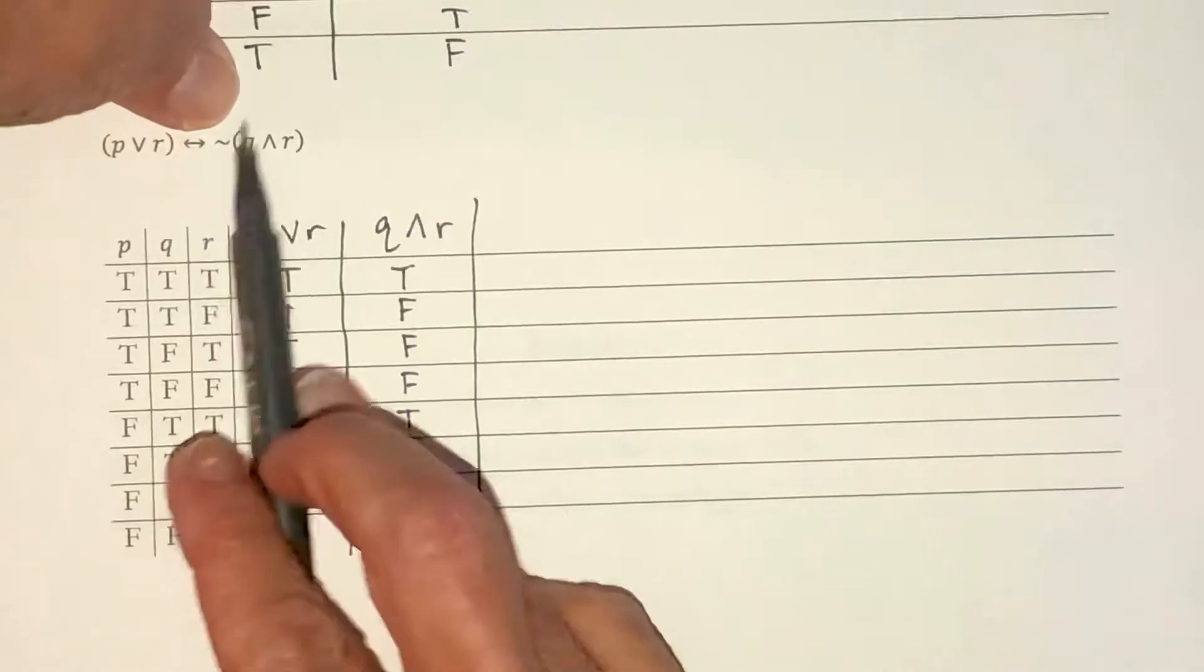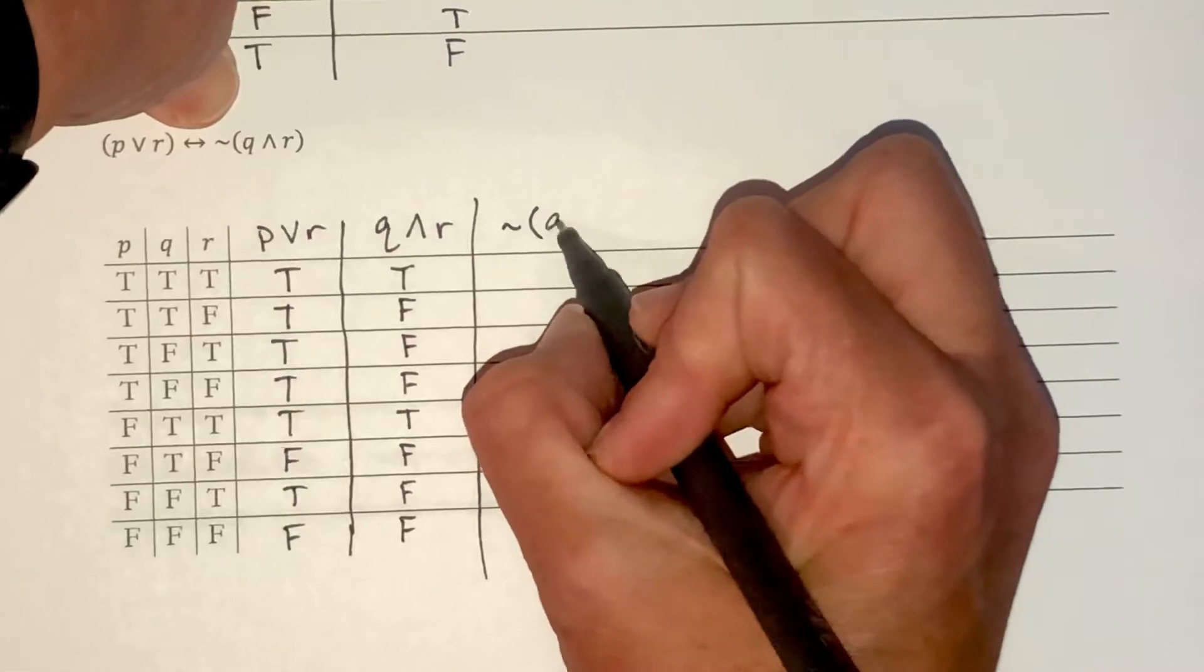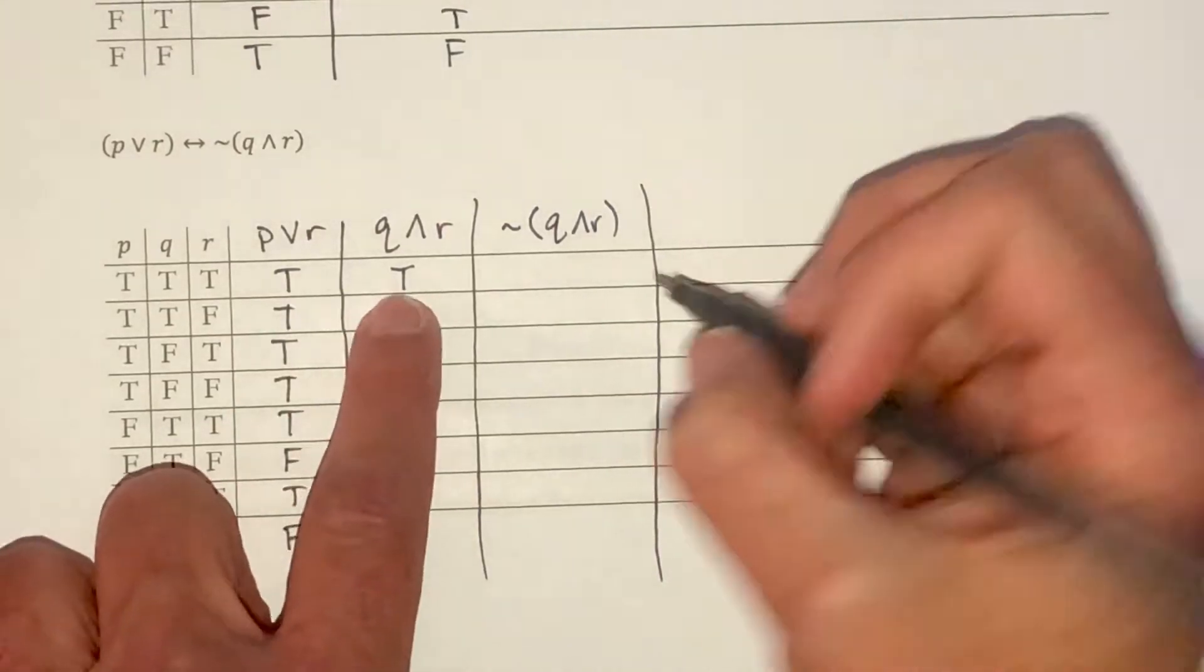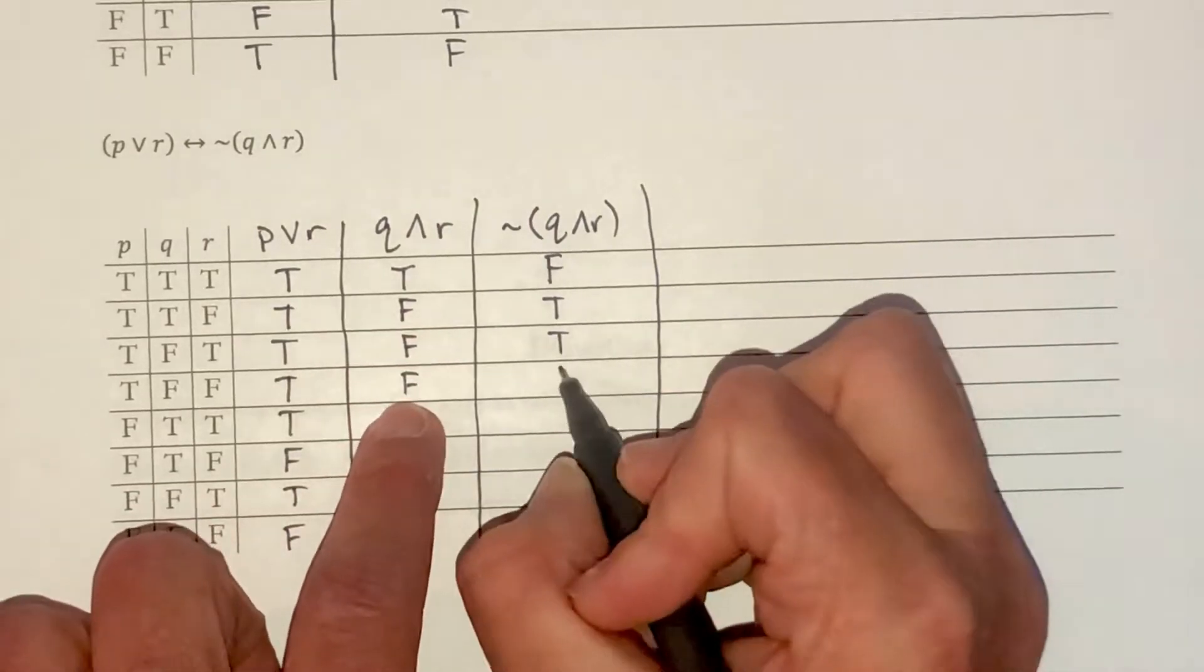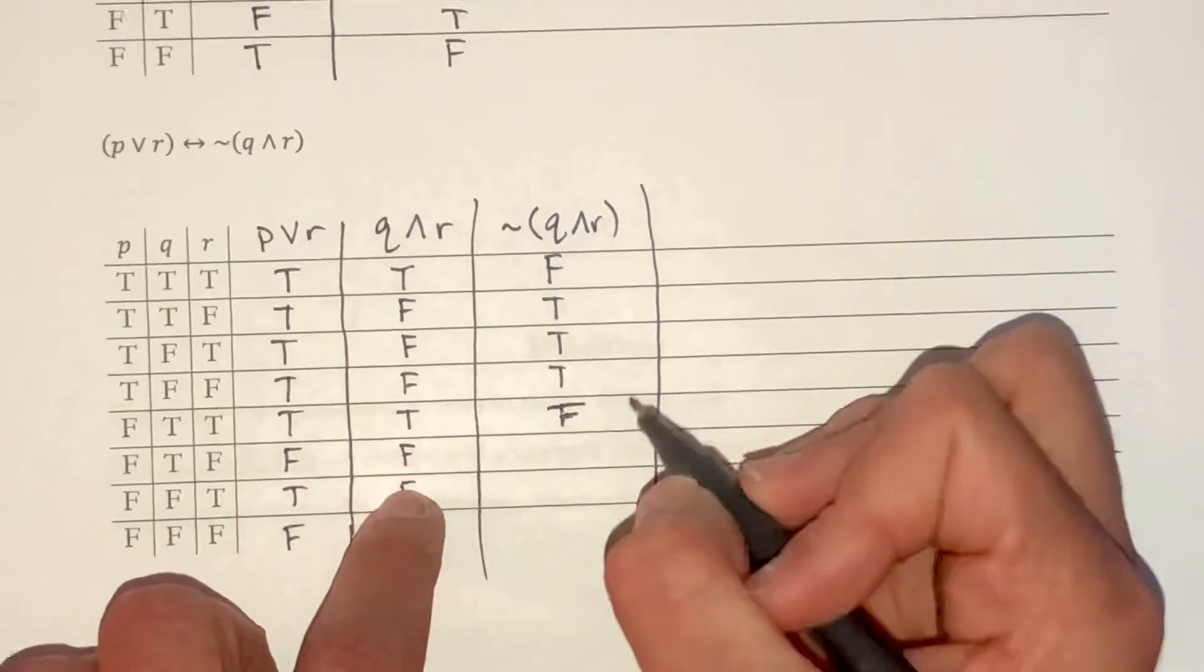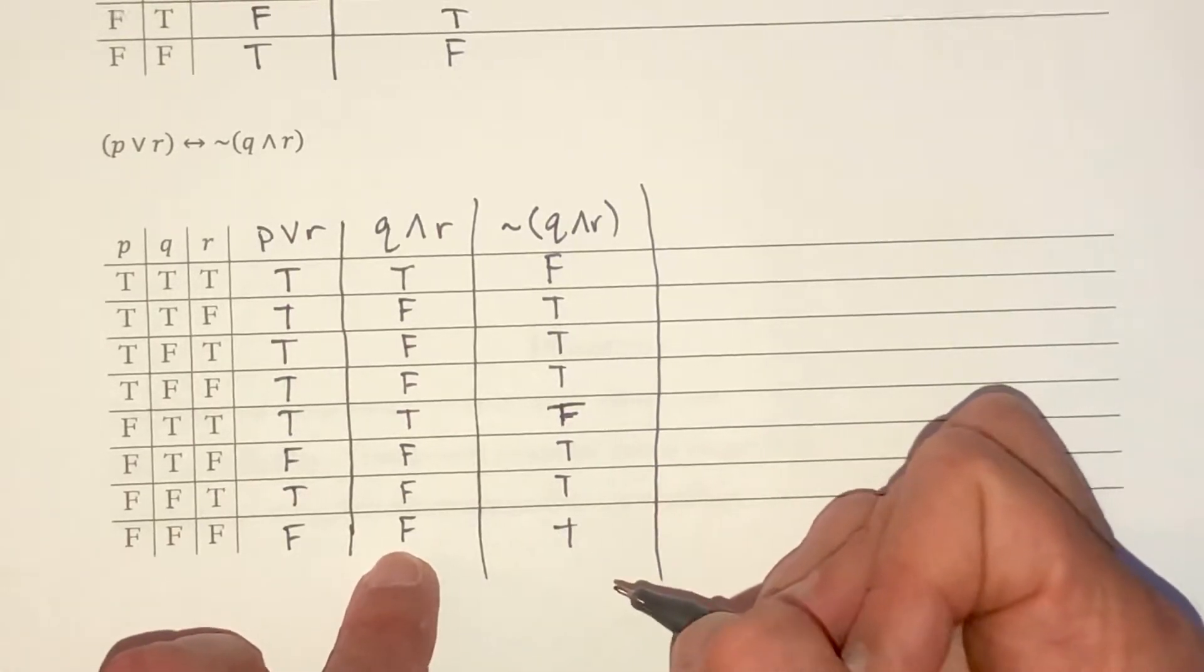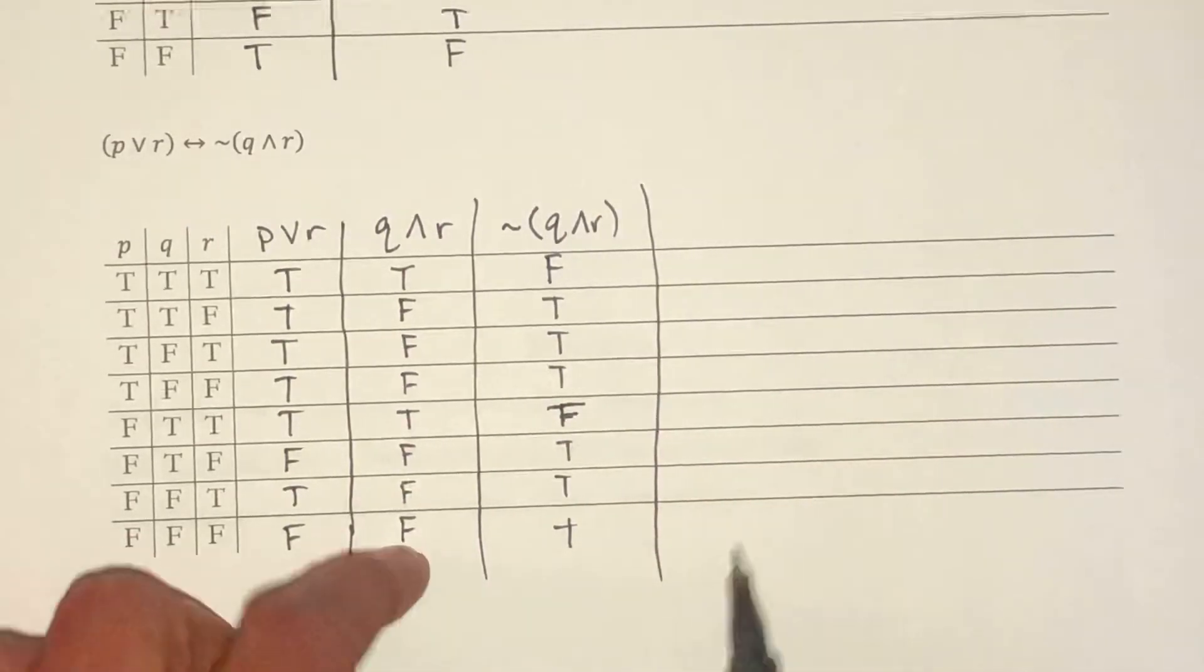Now we need to negate this. So this is not Q and R. So I just change each of these. So false, true, true, true, true, false, false. True, true, and true. True, true, true, true, true, true. I'm double checking because I made one stupid mistake. I think that's correct.